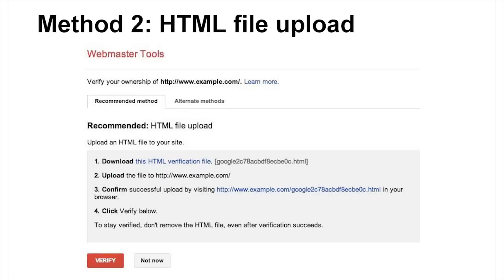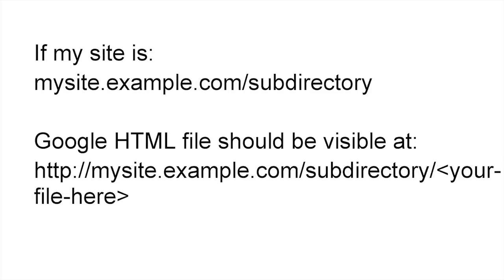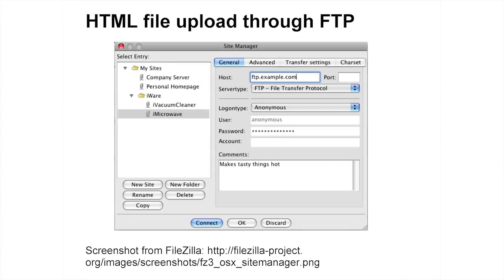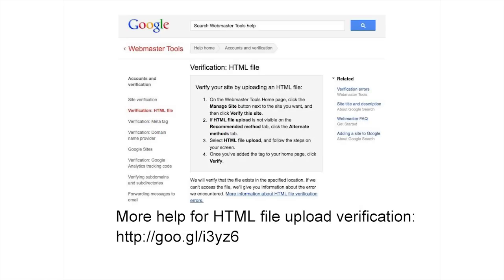If you didn't see your provider, or if that method was unsuccessful for you, then let's talk about the HTML file upload method. HTML file upload is a good option for those who can easily upload files to their root directory, meaning the first or main directory of their site. For example, if my site is www.example.com, I would upload an HTML file to my root directory at www.example.com/myfile. Or if my site is mysite.example.com/subdirectory, then my root directory would be at mysite.example.com/subdirectory/myfile. If you're a site owner who can upload files from either your site administration tool or by FTP or terminal or shell access, an HTML file upload may be a great option for you.